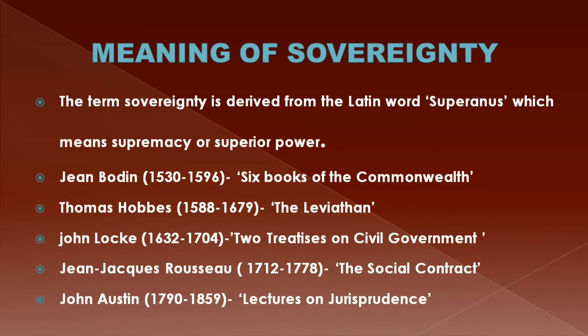To him, sovereignty was indivisible and the sovereign was a source of all authority. The next exponent of sovereignty was John Locke. He did not possess ultimate powers; according to him sovereignty was not supreme, because he gave power to the people to revolt against sovereignty if authority did not fulfill the duties given to him by the people.